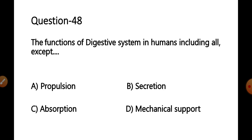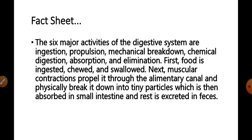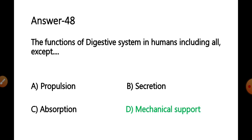Question 48: Functions of the digestive system in humans include all except — options: A) propulsion, B) secretion, C) absorption, D) mechanical support. The six major activities of the digestive system are ingestion, propulsion, mechanical breakdown, chemical digestion, absorption, and elimination. The key distinction is mechanical breakdown — not mechanical support — is a vital function. Propulsion, secretion, and absorption are all genuine digestive functions. The correct answer is option D — mechanical support.